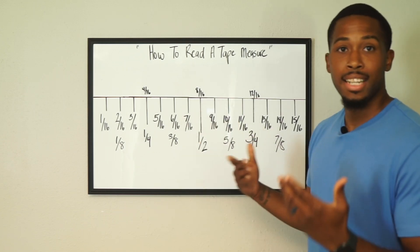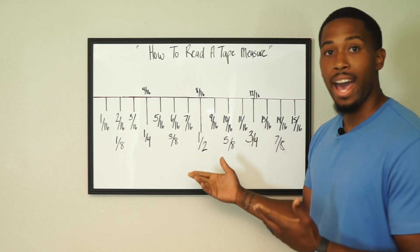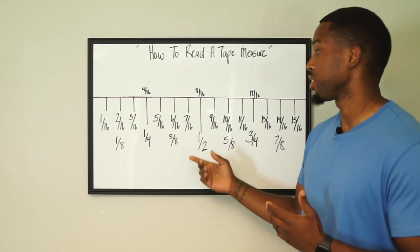Now we'll go to six sixteenths. Half of six is three, half of sixteen is eight. That's how you get your three eighths number.